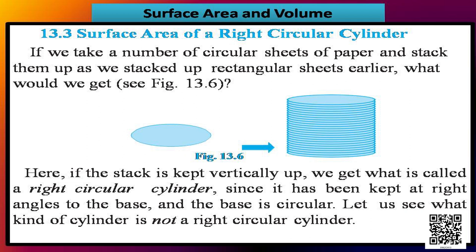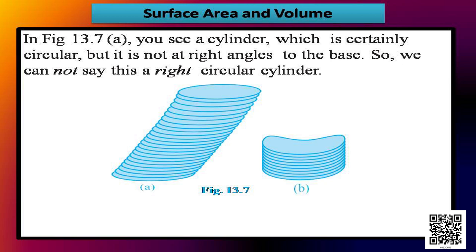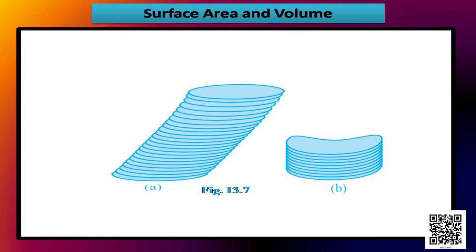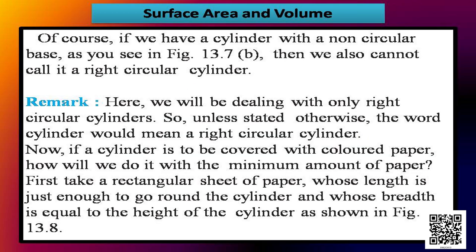Let us see what kind of cylinder is NOT a right circular cylinder. A cylinder whose base is circular but is not at right angles to the base cannot be called a right circular cylinder. Similarly, a cylinder with a non-circular base also cannot be called a right circular cylinder. Here, we will deal only with right circular cylinders, so unless stated otherwise, the word 'cylinder' means a right circular cylinder.